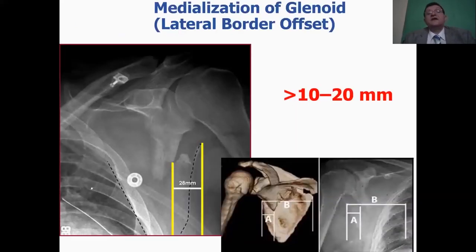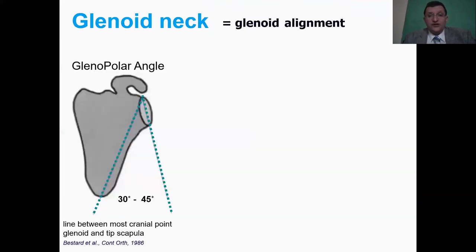This displacement was found, was measured by the lateral border offset, and if it is more than 10 to 20 millimeters, we consider this as disruptive to the rotator cuff function and shoulder function.